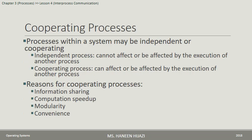Cooperating Processes: A process system can be independent or cooperative. Reasons for cooperating processes include: first, Information Sharing — some users can access information concurrently; second, Computation Speedup — a task is divided into sub-tasks that can run in parallel to improve performance.